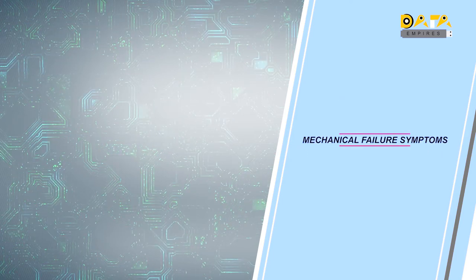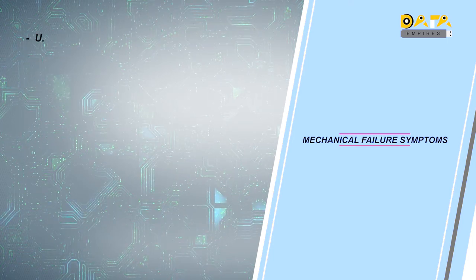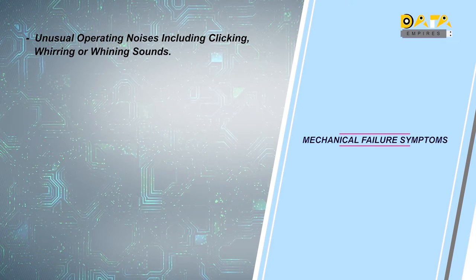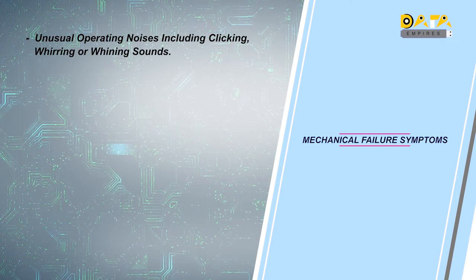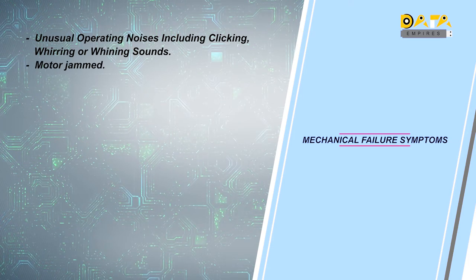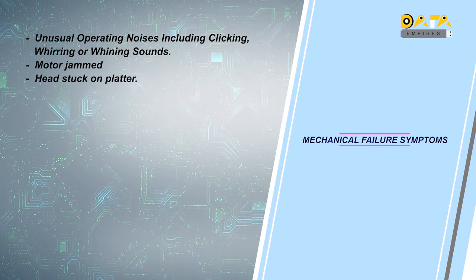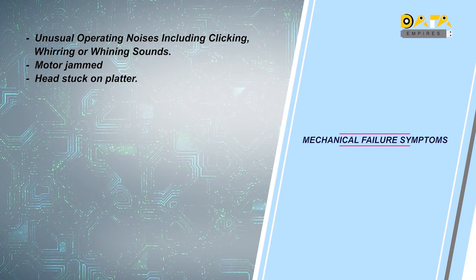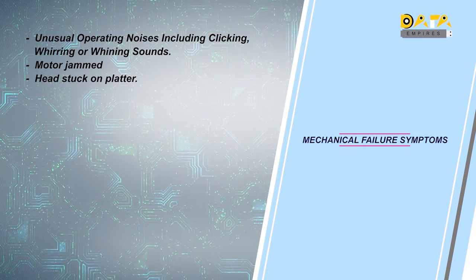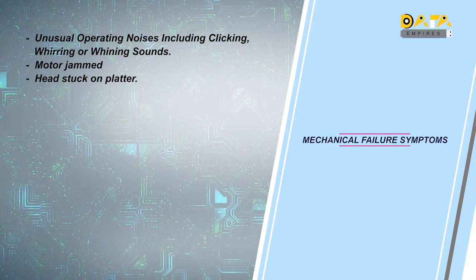First हम Mechanical Fault के Symptoms के बारे में जानते हैं. Hard Disk में से Unusual Sound आ रहा है तो यह Mechanical Fault होता है — इस Case में Head Damage हो जाता है. Hard Disk में Spindle Motor जाम हो गया है या Head Platter पर Stuck हो गया है तो यह भी Mechanical Fault होता है. यह Fault आने पर Hard Disk में से बहुत Slow आवाज़ आती है, जिसे हमें ध्यान से सुनना होता है.